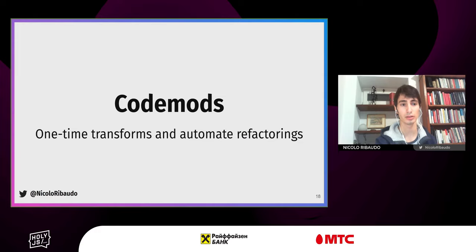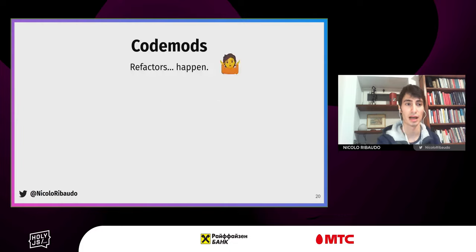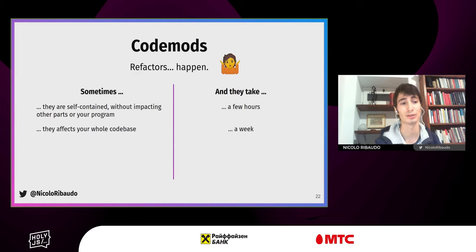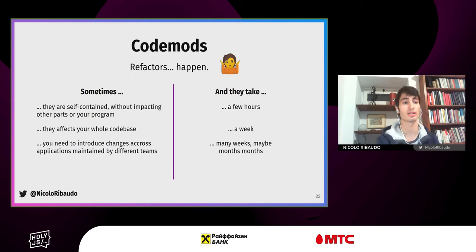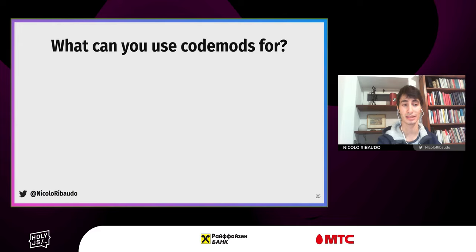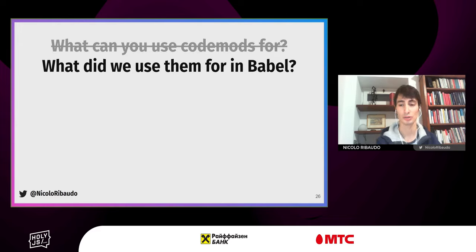So what are codemods? They are tools or programs that let you run one-time transforms. Why do we need that? Refactors happen — we all know. Sometimes they're self-contained and may take just a few hours, so it's okay to do them manually. Sometimes they affect the whole codebase and could take a few days, or you might need to introduce changes across different applications maintained by your company, which could take weeks.